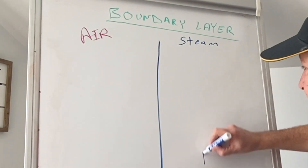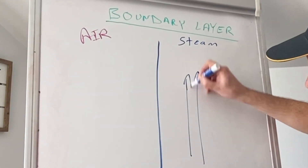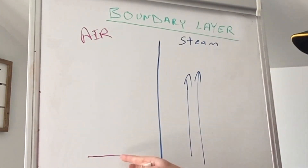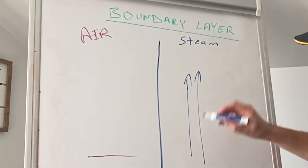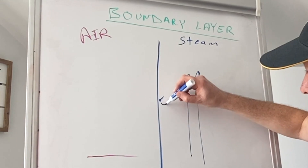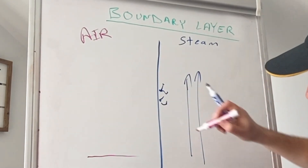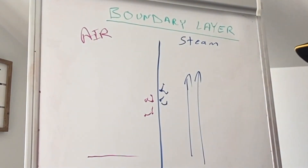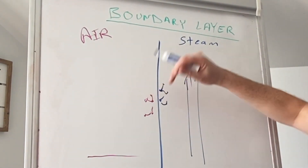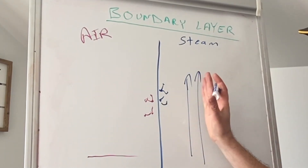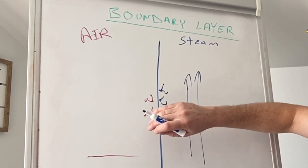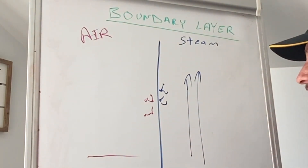Over here we've got our exhaust stream and it's moving at some velocity. Over here we've got air — your exhaust gases — and they're basically stagnant; initially you have no motion. Now at a molecular level, you've got your water molecules in your steam that are going to interact with the molecules of your exhaust gases. There's going to be friction interaction between those molecules, so your exhaust steam with its velocity is going to transfer energy into the molecules of your exhaust gases.